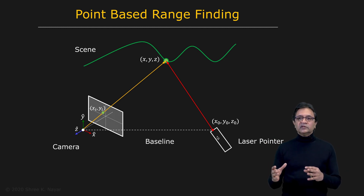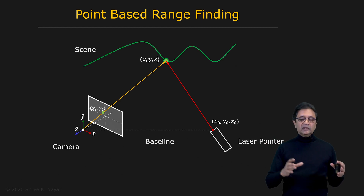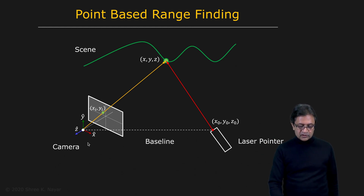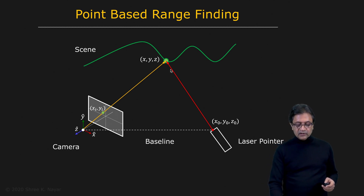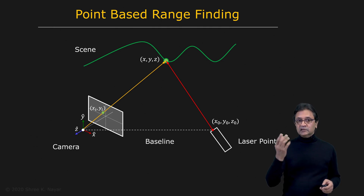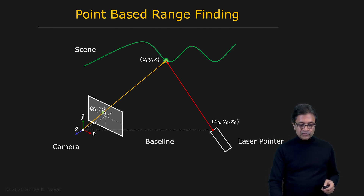We're going to assume that the position of this laser pointer and the camera is known with respect to each other. We'll define the coordinate system of this entire range finding system to be located at the central projection or pinhole of the camera. So we know where the pointer is and how it's oriented with respect to this coordinate frame. You shine this ray out into the scene and it strikes the surface at some point, producing a bright radiance that gets imaged by the camera at location XI, YI. The question is: if I'm able to detect XI, YI — the bright point — can I compute the three-dimensional coordinates of that point?